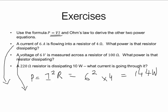Second one. Voltage is 6 volts, resistance is 100 ohms. So P is V square divided by R, 6 square divided by 100, 0.36 watts.